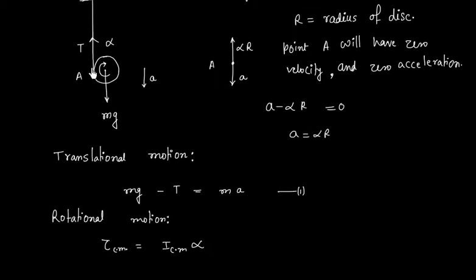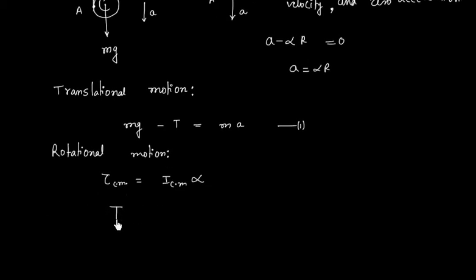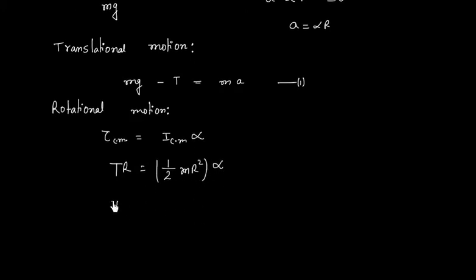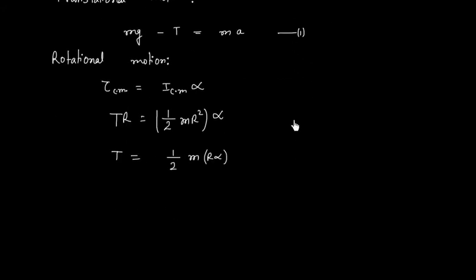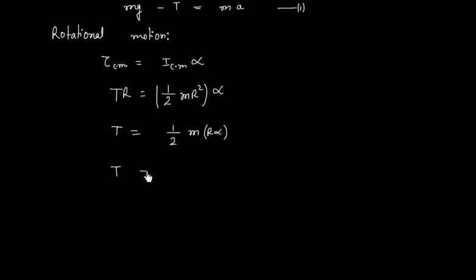The torque is T times R. The moment of inertia about the center of mass is half mR squared because this is a disk. Angular acceleration is alpha, so we will have T equals half mR alpha. Now we know R times alpha is A, so we can plug this value.